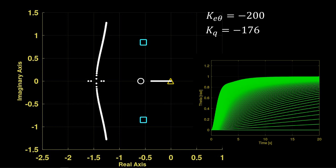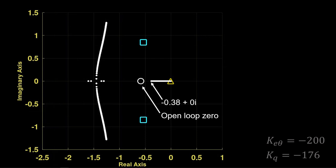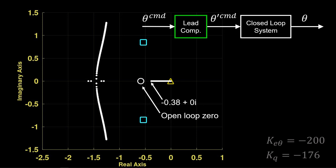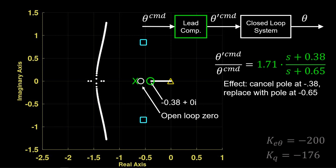We select a proportional error gain of minus 200 based on a 0.7 damping ratio. We correct for the bend in the step response curve with the lead compensator, placed at the input to the closed-loop system. In effect, it cancels the slow pitch pole and replaces it with a faster one of our choice. This allows us to get around the plant's open-loop zero, which otherwise attracts the closed-loop pitch pole, limiting pitch tracking response.